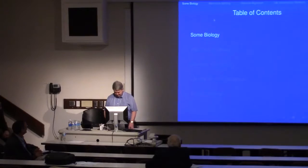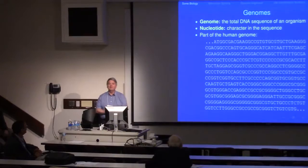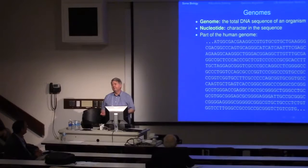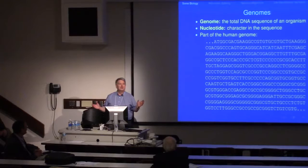The biology starts with genomes. Organisms have genomes — the DNA that makes up their genomes — and each letter in a genome is called a nucleotide. This is part of the human genome; it just looks like a string of A's, C's, G's, and T's, so it's great for computer scientists.